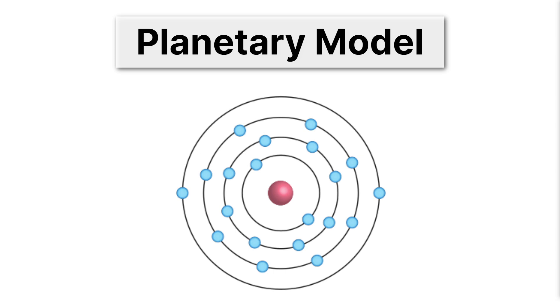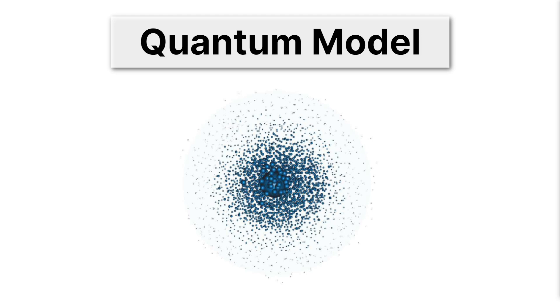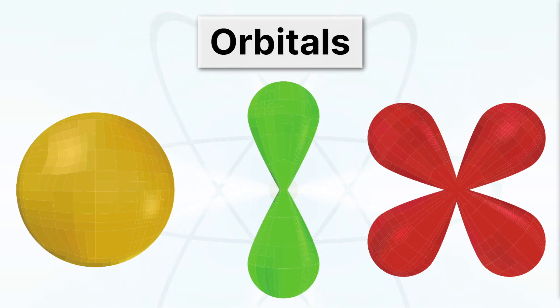The most recent model of the atom is the quantum model of the atom, where we think of electrons as smeared out all around the nucleus. Remember, they're smeared out into orbitals, and they come in different shapes. So that spherical one is an s orbital, and that basically means that the electron is smeared out and could be anywhere inside that sphere.